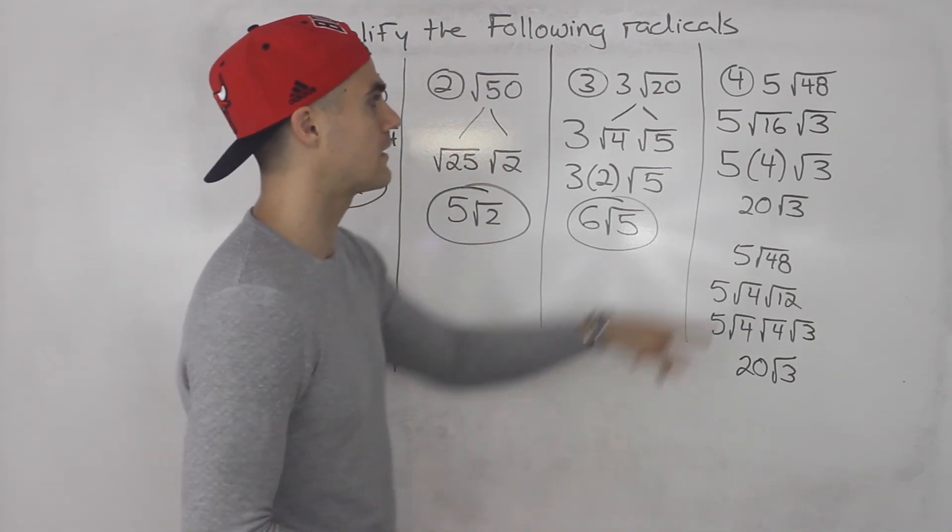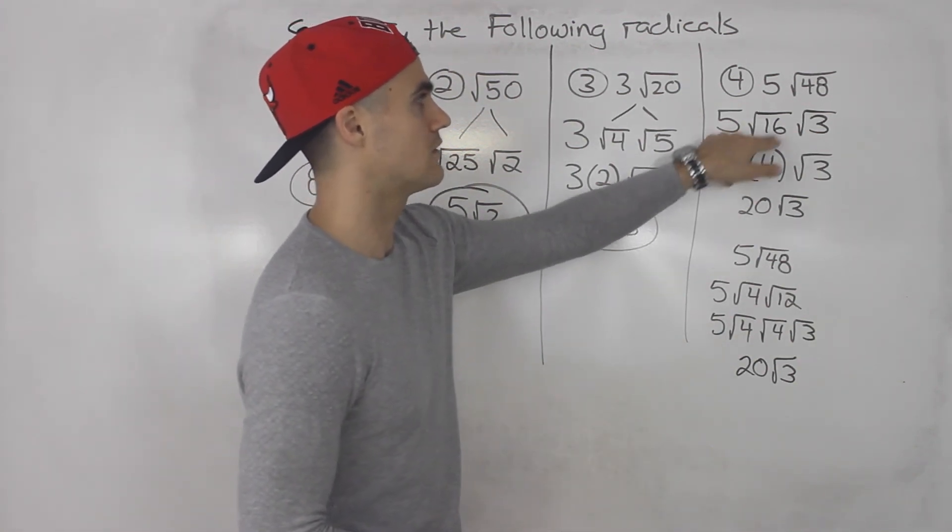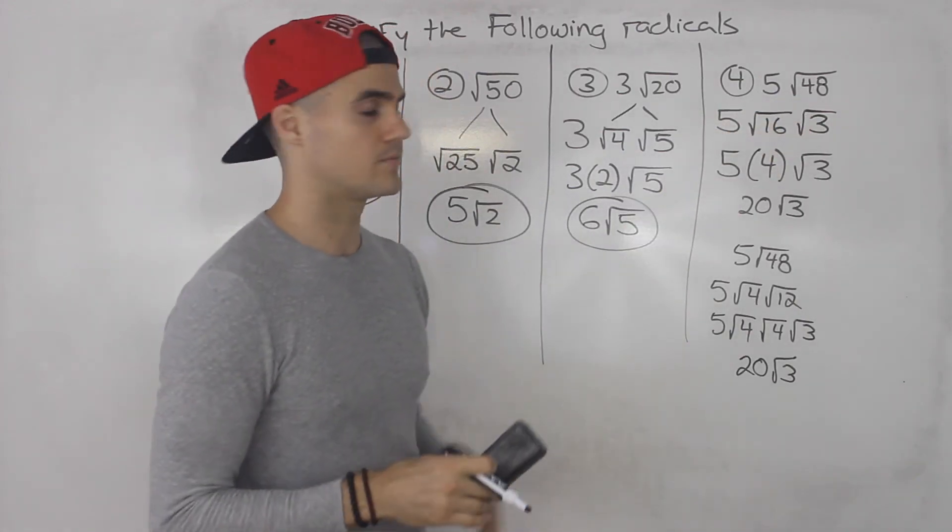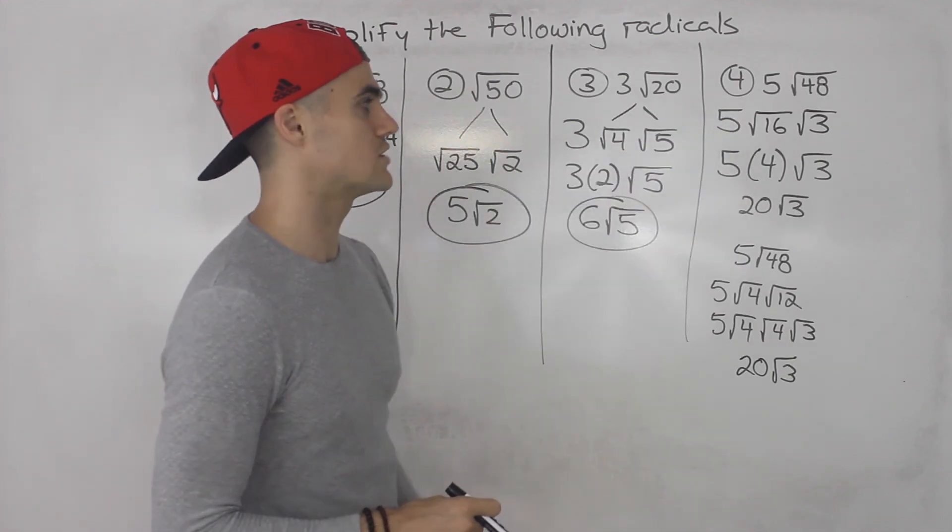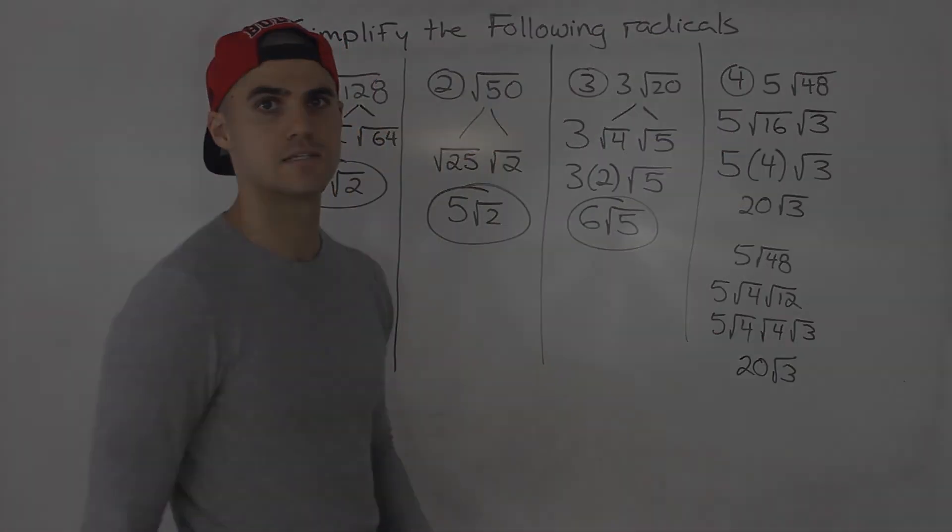But like I mentioned before, if you can find the highest rootable number that you can split that original number inside the radical into, then the simplification is only going to be one step.